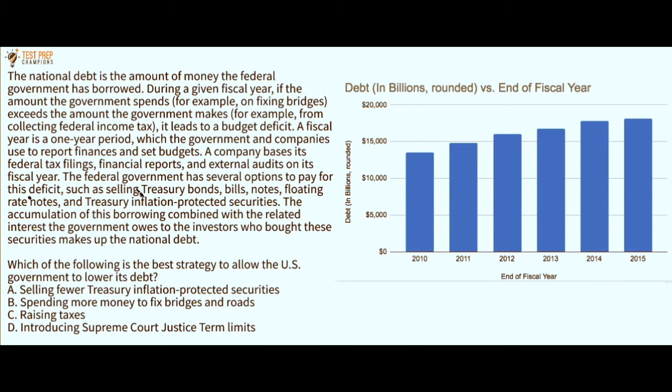The next two questions involve using this passage and the graph on screen. The national debt is the amount of money the federal government has borrowed. During a given fiscal year, if the amount the government spends — for example, on fixing bridges — exceeds the amount the government makes — for example, from collecting federal income tax — it leads to a budget deficit. A fiscal year is a one-year period which the government and companies use to report finances and set budgets.